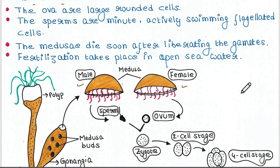This is the ova released from the female Medusa. The ova are large round cells. And this is the sperm released from the male Medusa — sperms are very minute and are actively swimming flagellate cells; you can see the flagellum and it can swim actively. The Medusa dies soon after liberating the gametes — after releasing the gametes, both male and female Medusa will die.